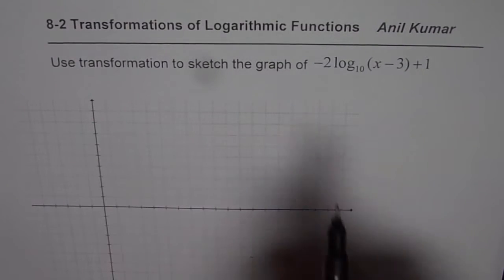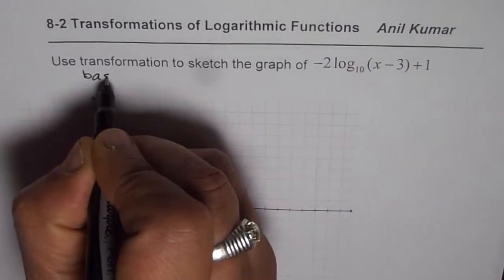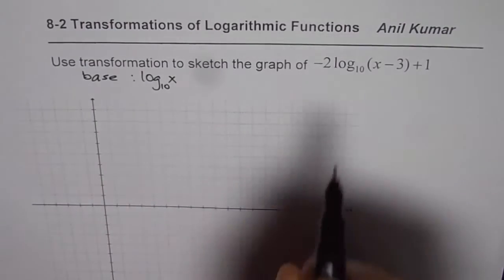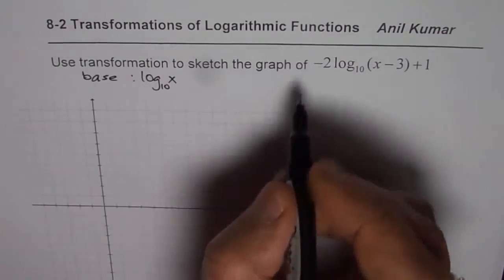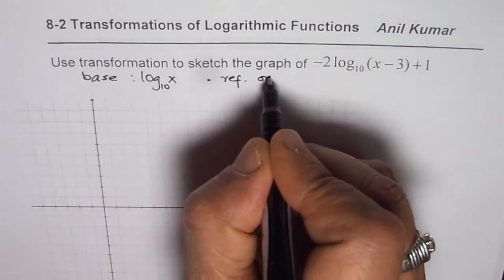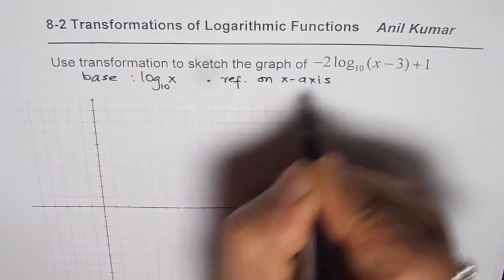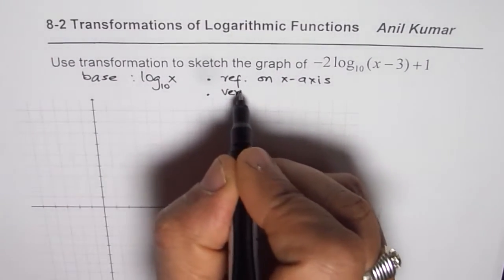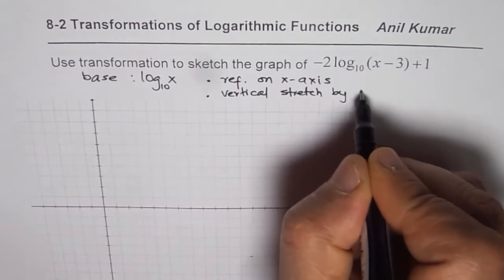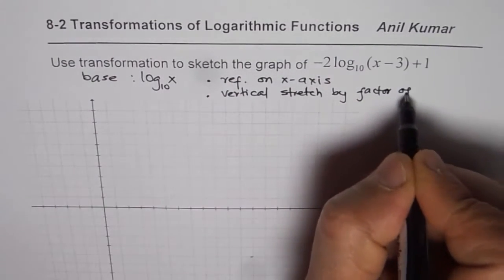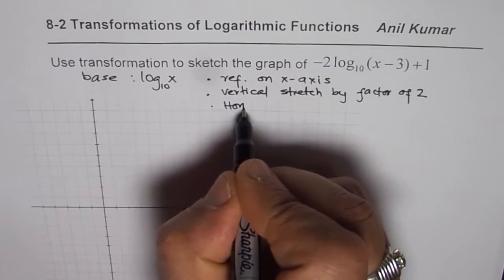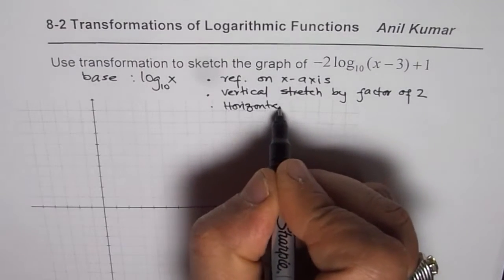In this particular function, the base function is log to the base 10 of x. We can now write down all the transformations. Starting from the base function, first there is a reflection on the x-axis, and then a vertical stretch by a factor of 2. Then there is a horizontal translation of 3 units right.